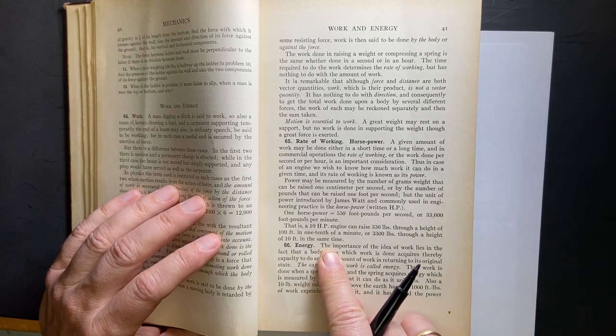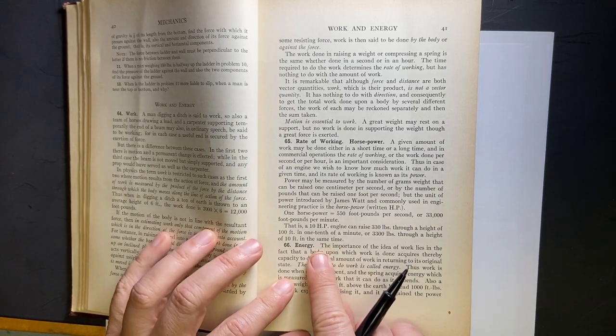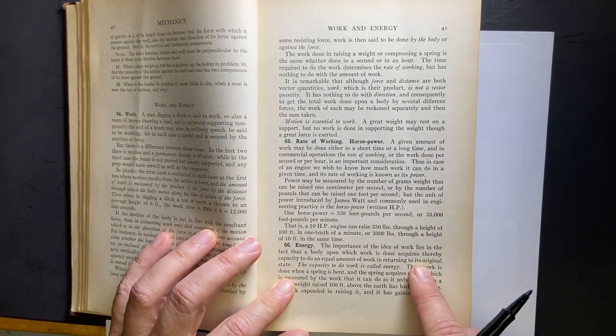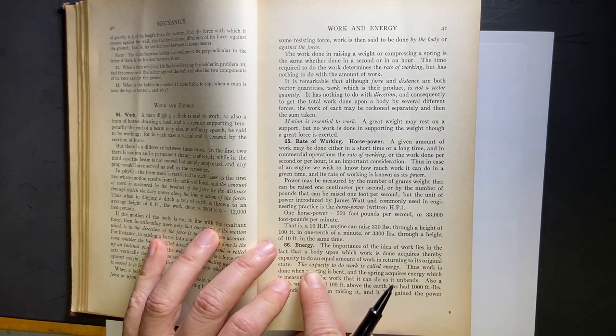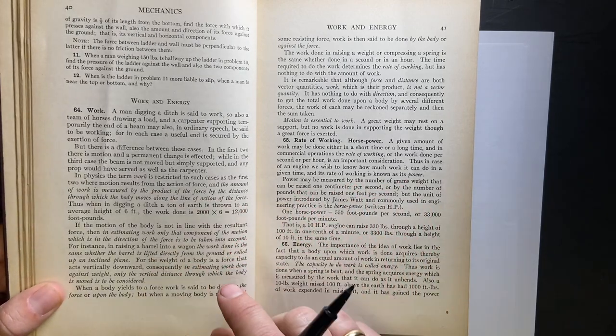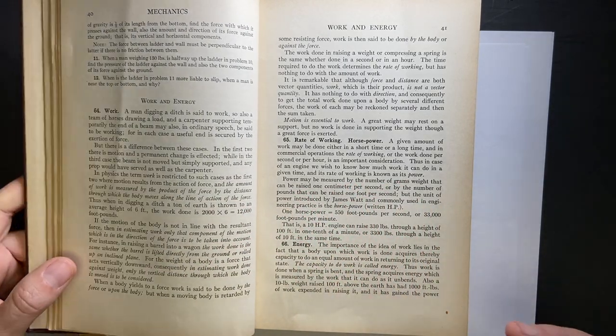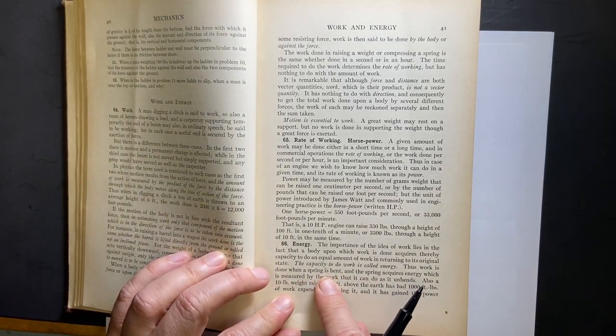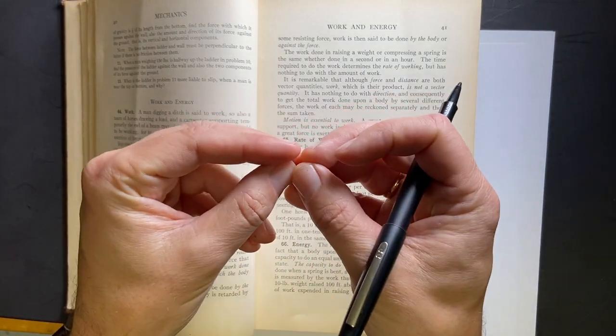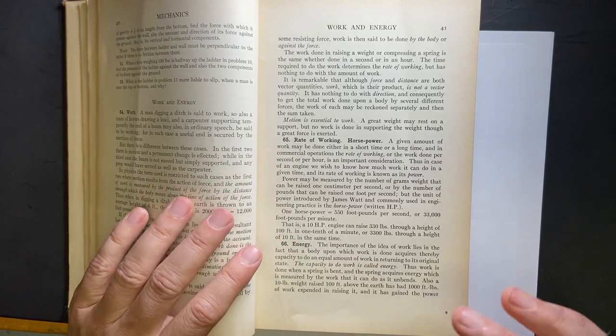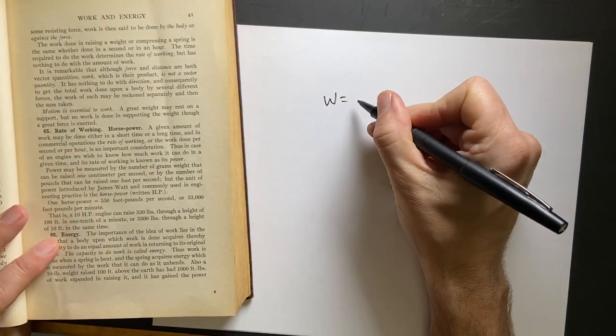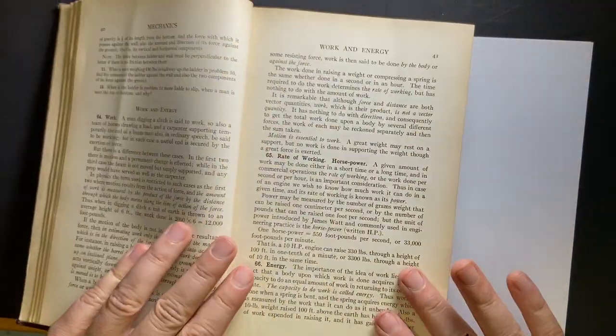Now they get to energy. And they give an example of horsepower right there. So work that a body upon which work is done acquires thereby the capacity to do economic work in its original state. You see this line all the time. The capacity to do work is called energy. And then they define work as this force dot displacement. That's fine. But a lot of times people define energy as something to do with work. So it's kind of a circular definition. So work is done when a spring is bent. And the spring acquires energy, which is then measured by the work it can do as it goes. So you're saying if you do something and change its state by amount of work, then that's its change in energy. So this is really saying the work energy principle, which is this. The work on a system is its change in energy. That's really important. But they didn't, again, I think this would really help to have an equation.